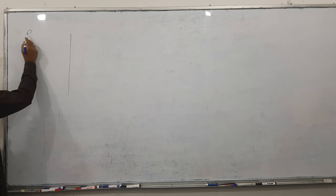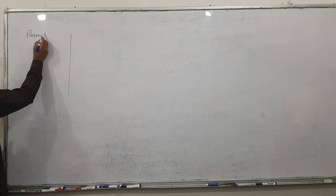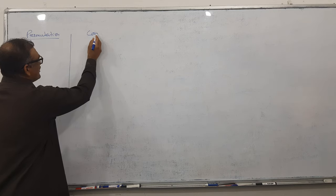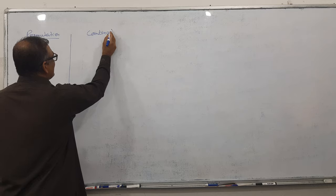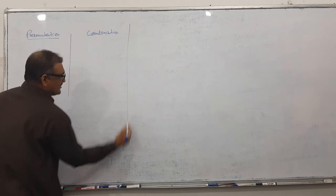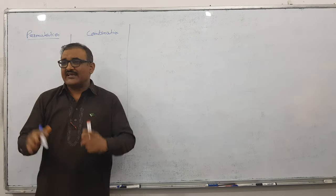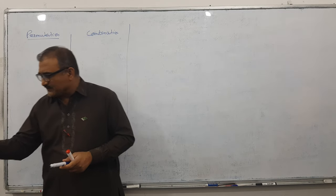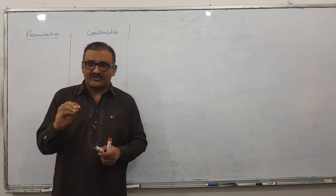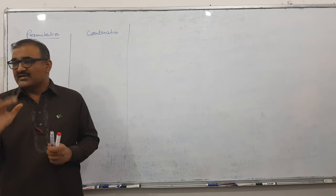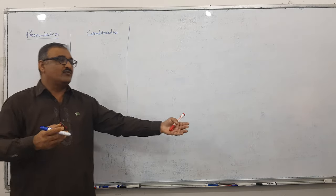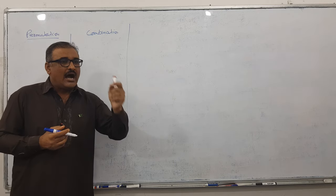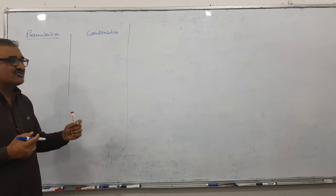I start on permutation first, and then I will talk about combination. Actually, till the end of the chapter, students face difficulty in only one thing: when to use permutation and when to use combination. This is the hardest thing. You will find difficulty in only one area - how to decide permutation and how to decide combination.